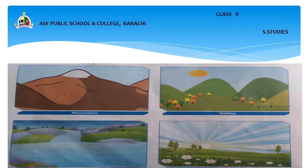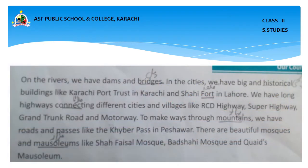The landforms include mountains, valleys, rivers, and plains. On the rivers, we have dams and bridges. In the cities, we have big and historical buildings like Karachi Port Trust in Karachi and Shahi Fort in Lahore.